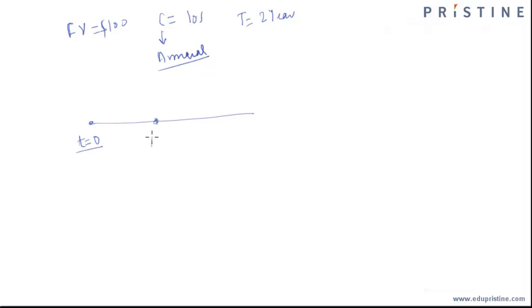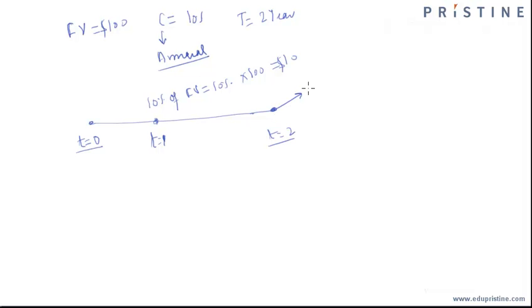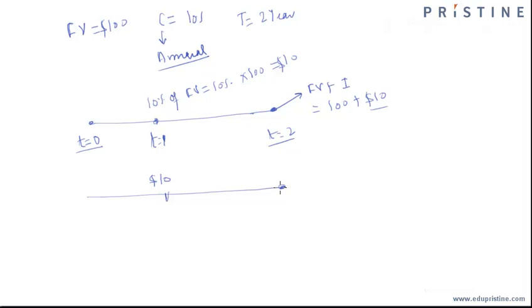If the bond was issued at t = 0, then after one year the investors are entitled to get 10% of the face value, which is 10% of $100 = $10. At maturity — t = 2 years — investors are entitled to get the face value plus the interest payment, which is $100 + $10 = $110. So in effect, investors get an intermediate payment of $10 and a payment at maturity of $110.